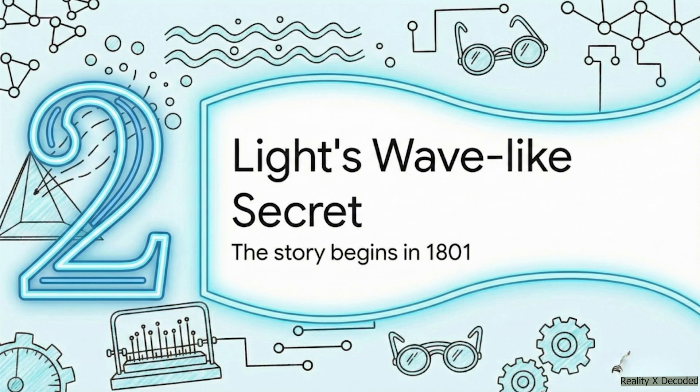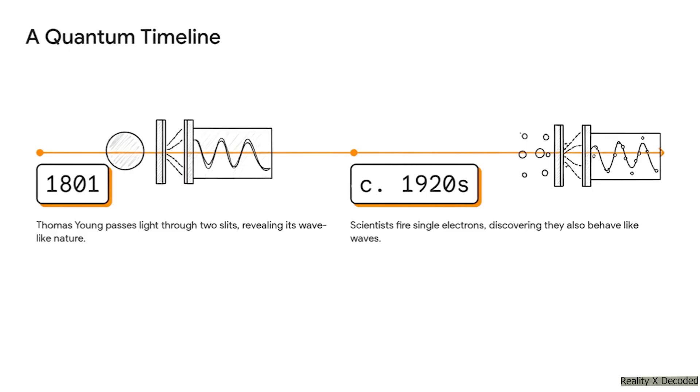To really get our heads around this, we've got to rewind the clock way back to 1801, with a physicist who had no idea he was about to kick-start a scientific revolution. So this physicist, his name was Thomas Young, and his setup was just genius in its simplicity.